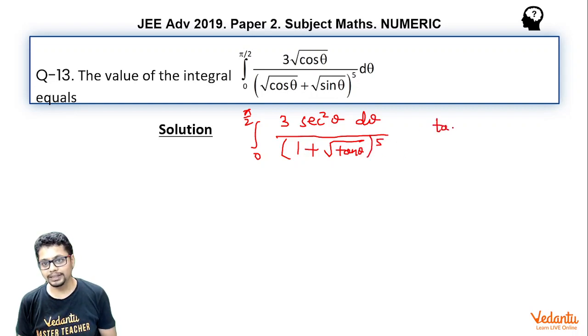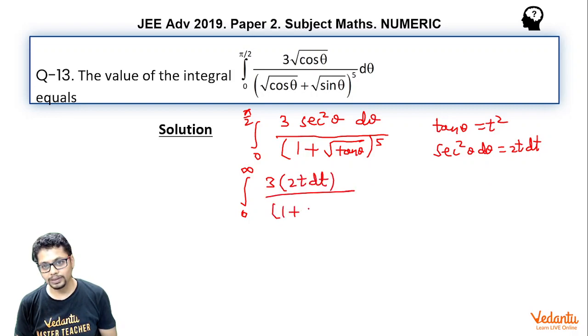Now, we can take tan theta as t square, which essentially would mean sec square theta d theta is 2t dt. And the limits will change from 0 to pi by 2 to 0 to infinity and you'll get 3 times 2t dt divided by 1 plus t whole to the power 5.